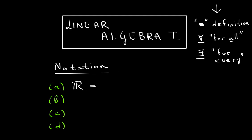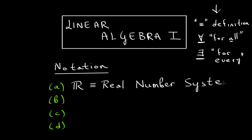The double-lined R is a very simple symbol you probably saw in high school — it means the real number system. In the Advanced Linear Algebra 1 series and in real analysis, I talk about how different number systems are constructed, including the naturals, reals, and complex numbers.